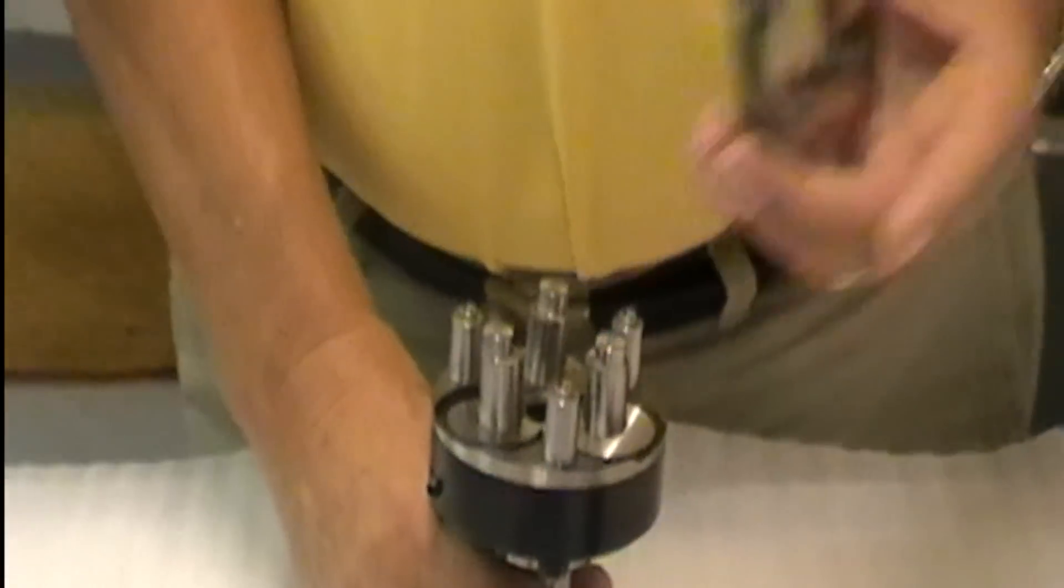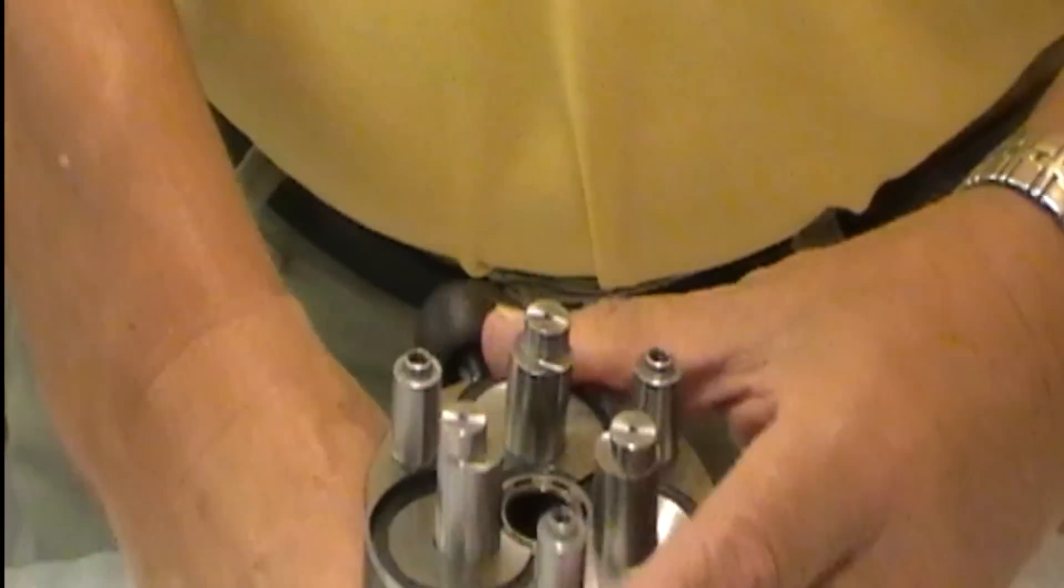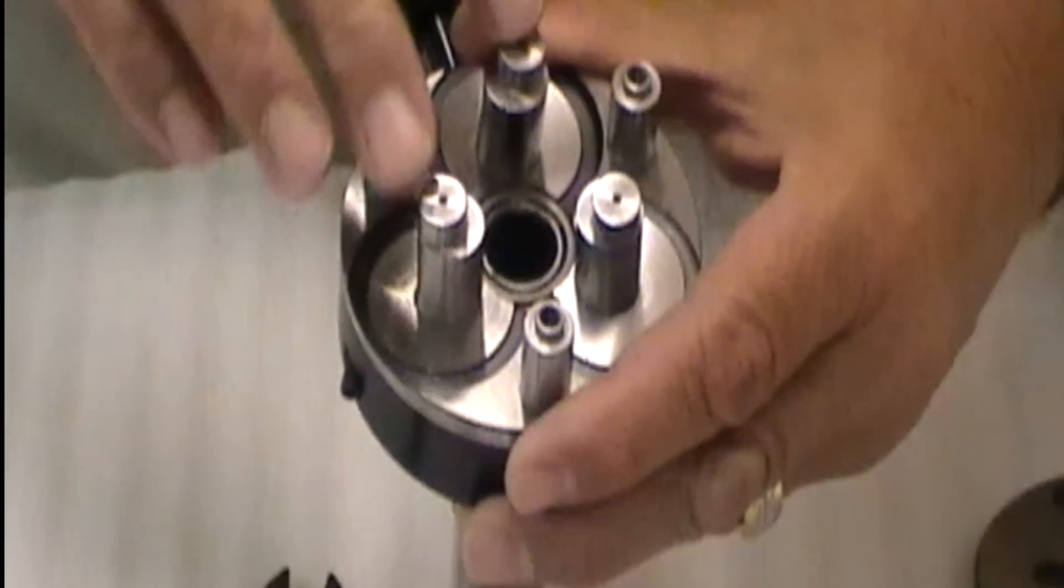You first take off the three screws on your front plate, exposing the body of your actual thread rolling head eccentric spindles.